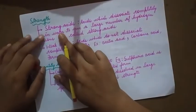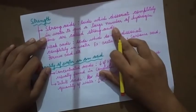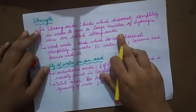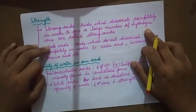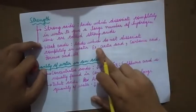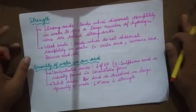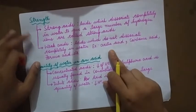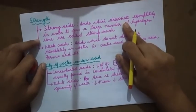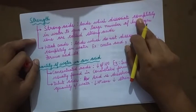Strength of acids. Strong acids are those which dissociate completely in water to give rise to a large number of hydrogen ions. Weak acids do not dissociate completely in water — not many H+ ions are produced. Weak acids include acetic acid, carbonic acid, and formic acid. Strong acids include H2SO4 (sulfuric acid) and HNO3 (nitric acid).